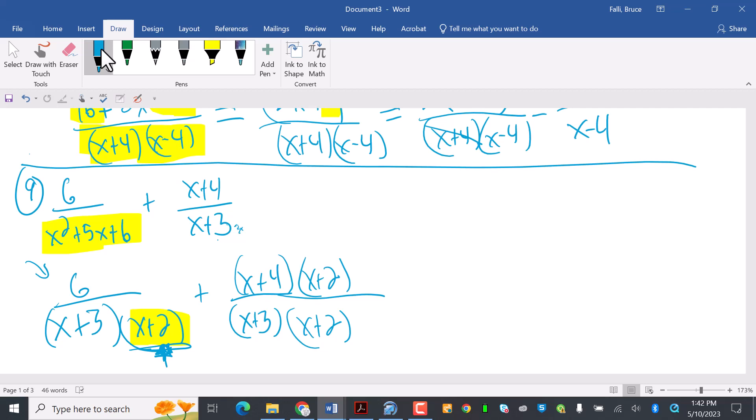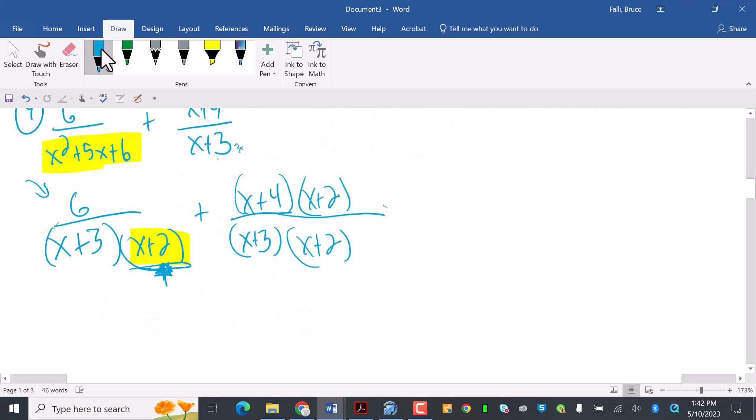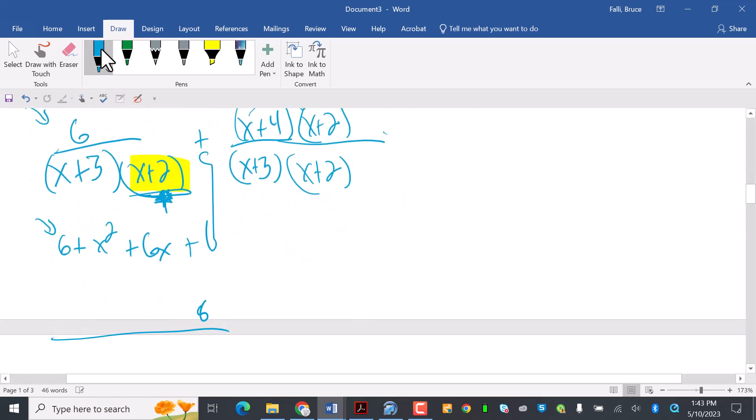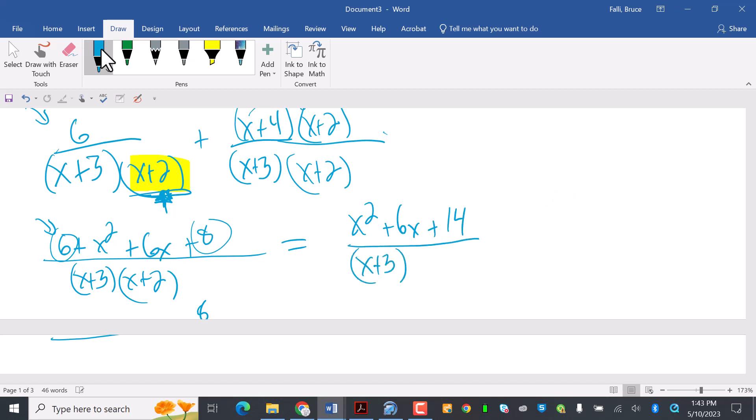So now I've got the same denominator. So I have 6 plus quantity x plus 4. I've got to FOIL this guy out because this 6 is probably going to make my foiled thing different. So x squared outside plus 2x inside plus 4x plus 6x and then plus 8 all over x plus 3, x plus 2. And then I'm going to simplify this. So my 6 and my 8 are going to come together. x squared plus 6x plus 14 over x plus 3, x plus 2.